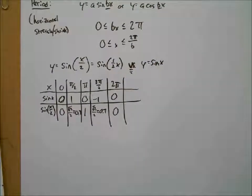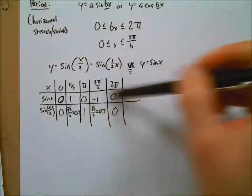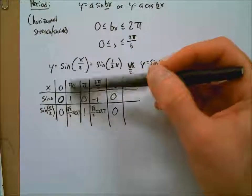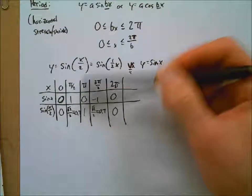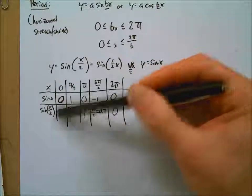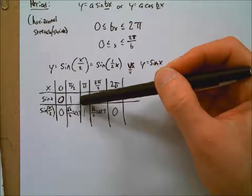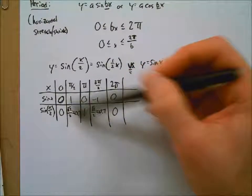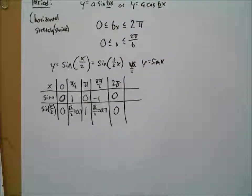You can see the stretch already happening. Here's our sine of x — at zero, they're both zero. But sine of x reaches 1 at pi over two, while sine of x over 2 doesn't reach 1 until pi — another pi over two step away. At pi, sine of x is zero, but sine of x over two doesn't get to zero until two pi. So again, that's stretched out.